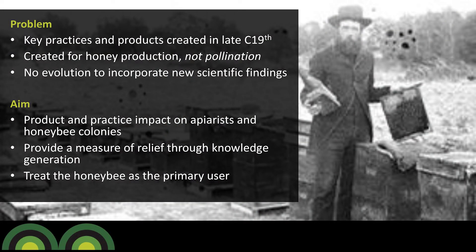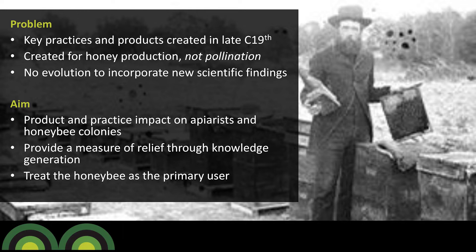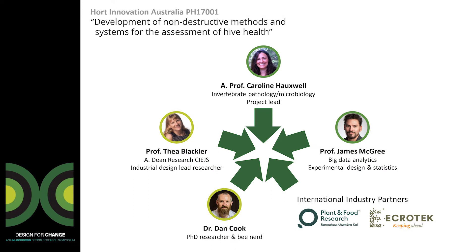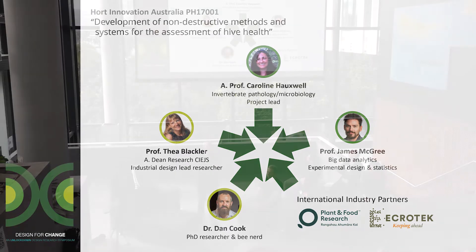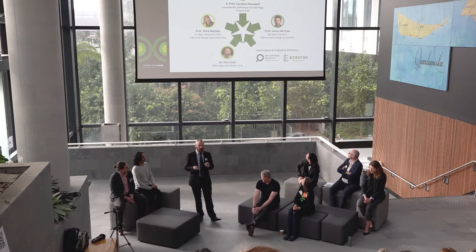That's about nine percent of global agricultural output that bees are responsible for, so it's quite a big field. One of the things I noticed was that there was very little evolution of beehive products and practices to actually incorporate modern science. So the aims of the project were to look at how the products and practices actually impact beekeeping and to see how we can enroll the science. We did this through a process of looking at the bee as the primary user rather than the beekeeper.